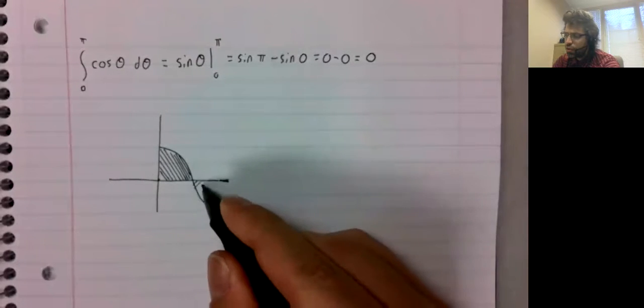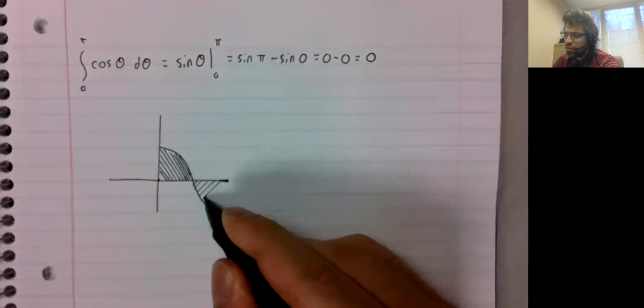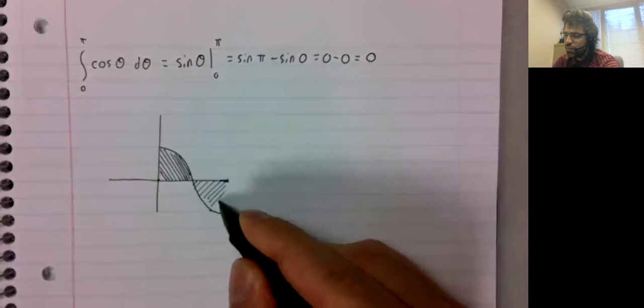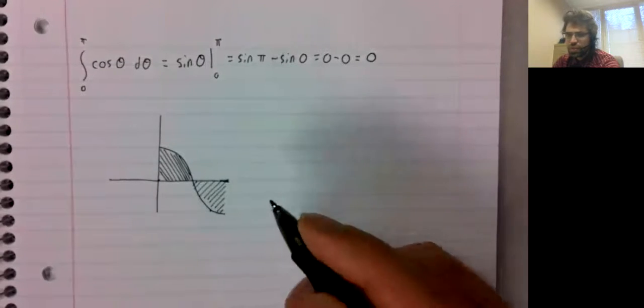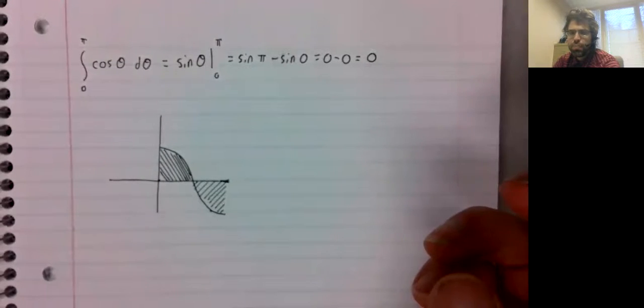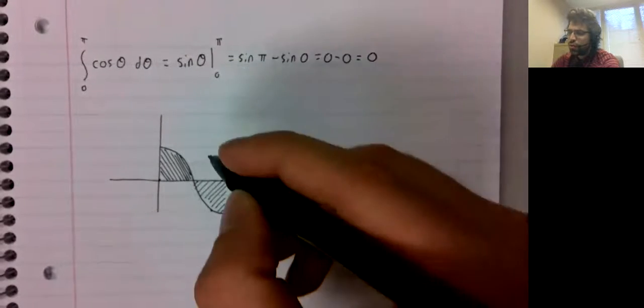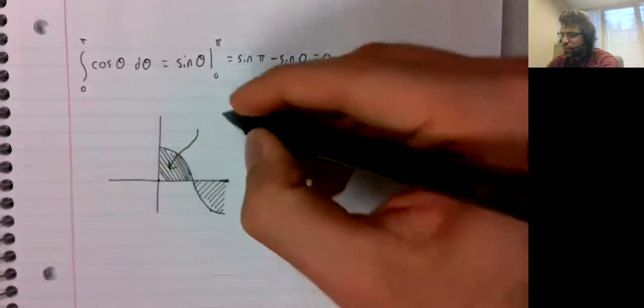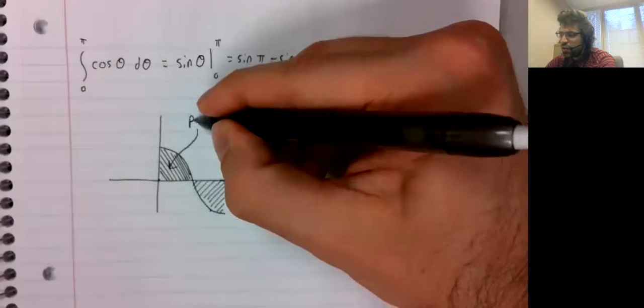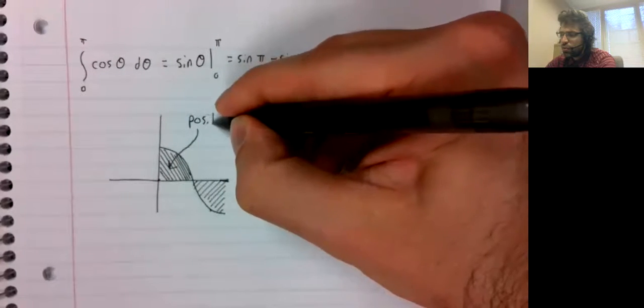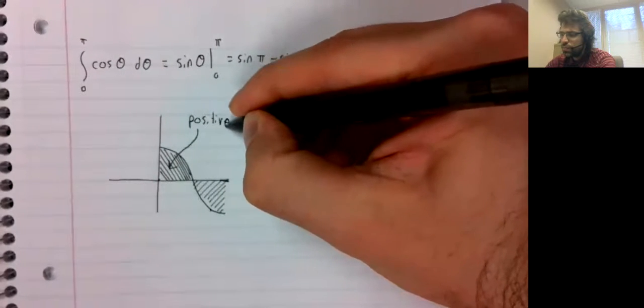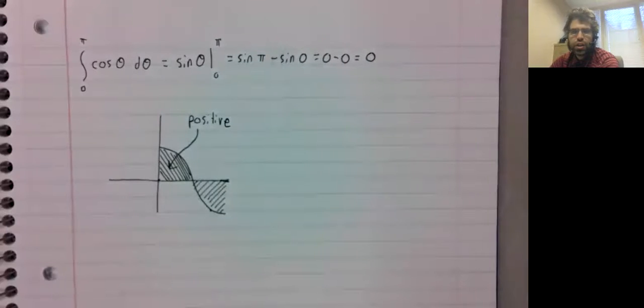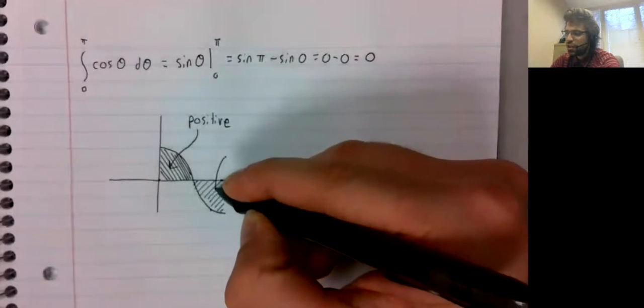What you could talk about instead is the area above the curve. And the way this works out is that area under the curve is counted as positive.